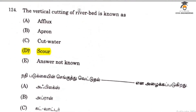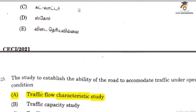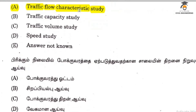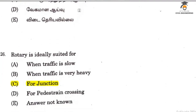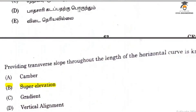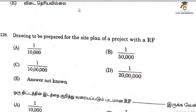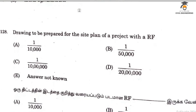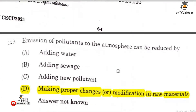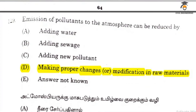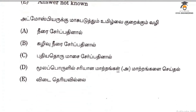Question 124 relates to score. Question 125 is traffic flow characteristics — steady. Question 126 is for junction. A rotary island is also for junction. Transfer slope relates to superelevation.